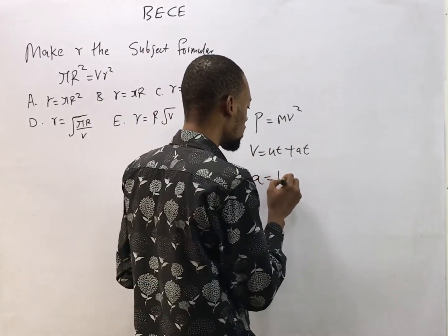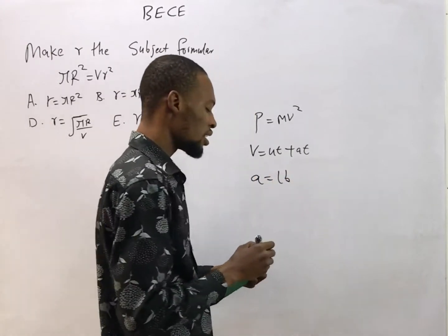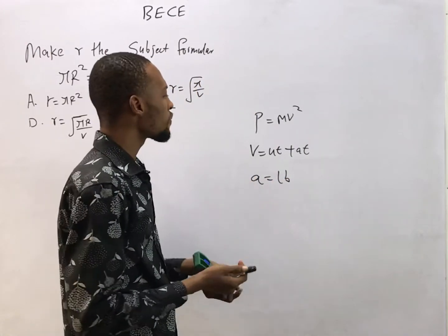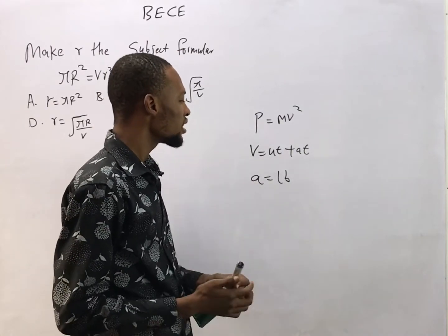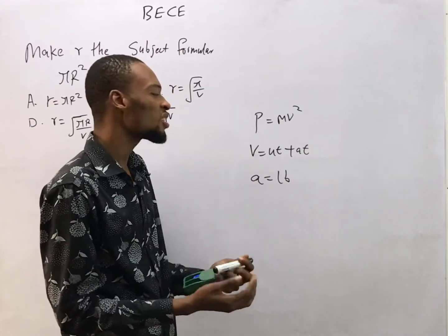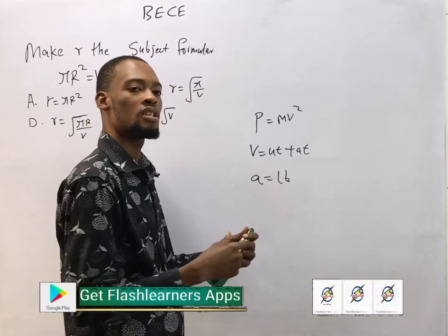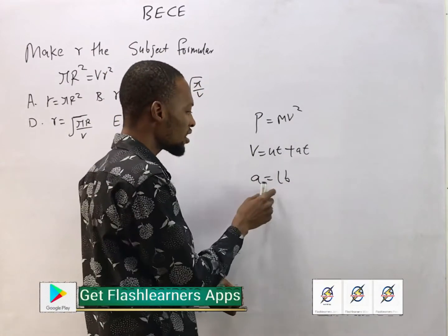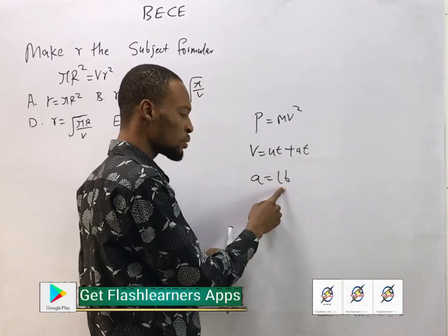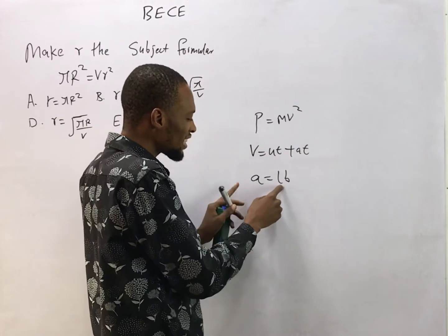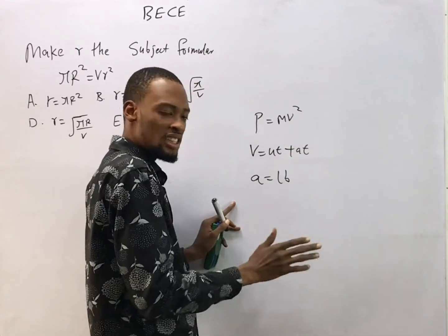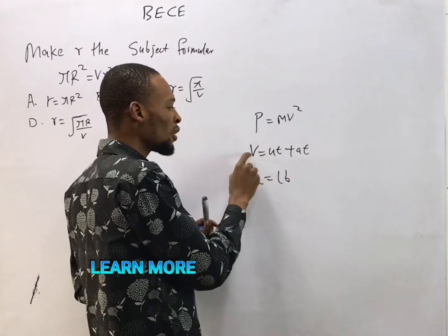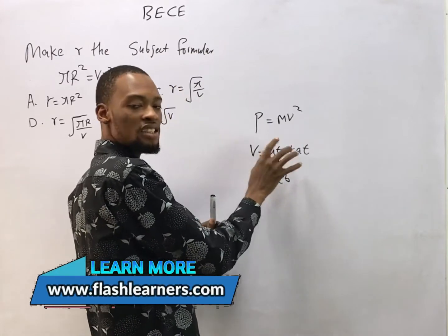If I say area equals length times breadth, A = lb, the subject formula here is A. Change of subject formula is simply changing the subject — making another thing stand alone, equal to the rest. So if I say make L the subject formula, it means let L be alone and equal to everything else. If I say make A the subject formula, it means rearrange this equation so that A will be here equal to every other thing.